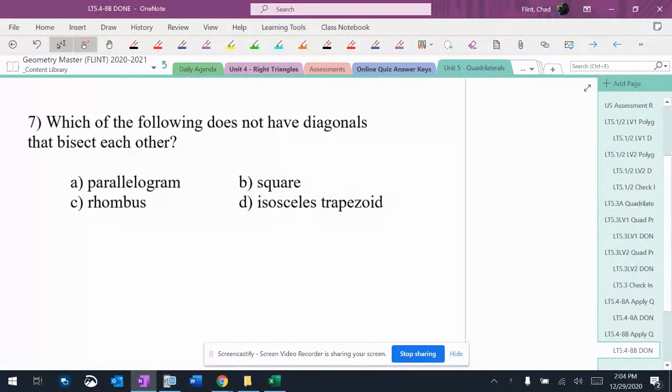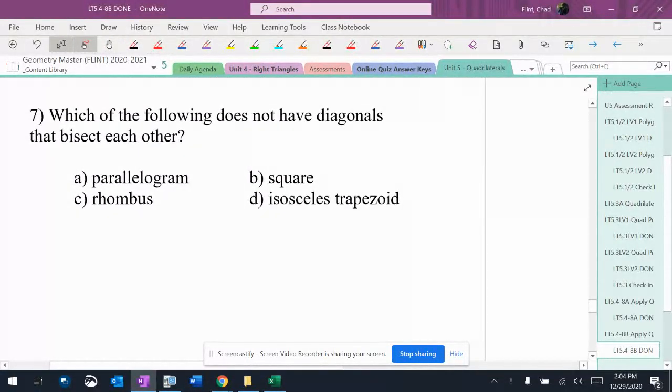The next question asks which of the following does not have diagonals that bisect each other. Diagonals bisect each other - that is a parallelogram property, so parallelograms definitely have it.